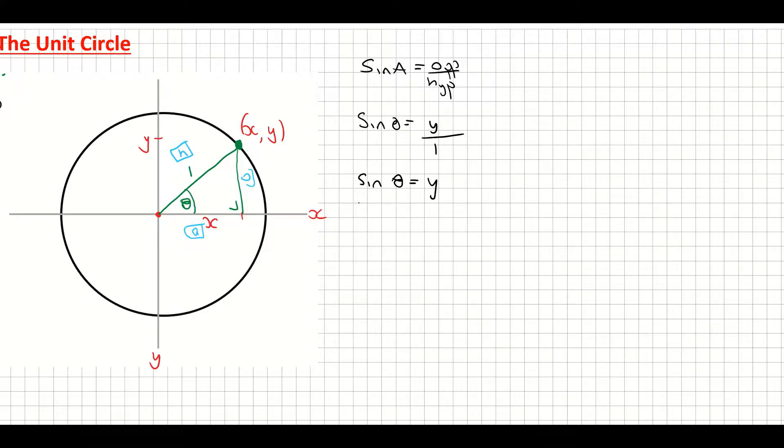And I'm going to do it out now for my cos ratio, which is adjacent over hypotenuse. And looking at my unit circle once again, I'm getting cos a, which is cos theta, is equal to adjacent, which is x, over my hypotenuse, which is 1.